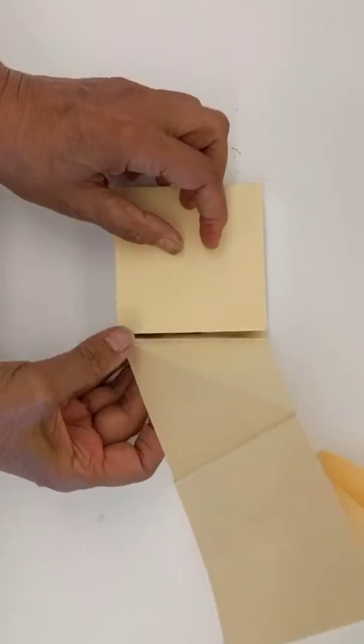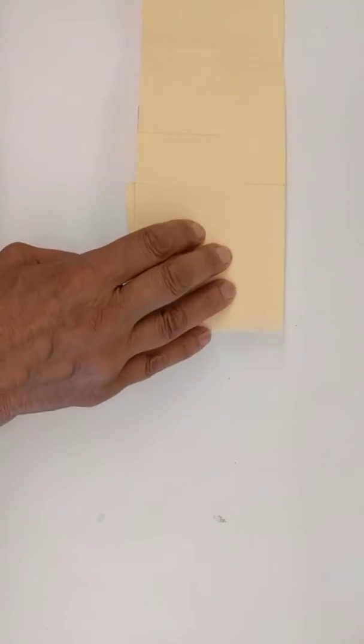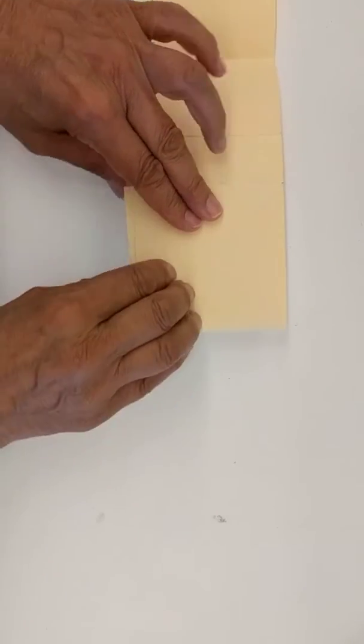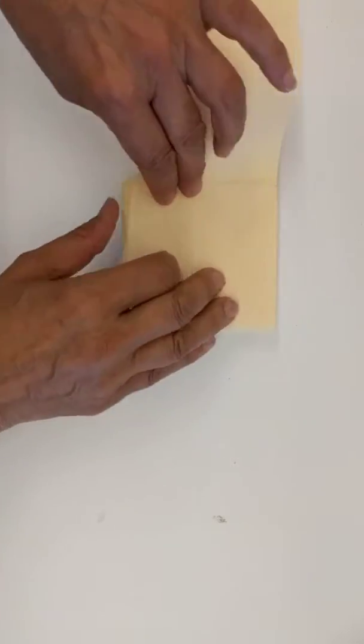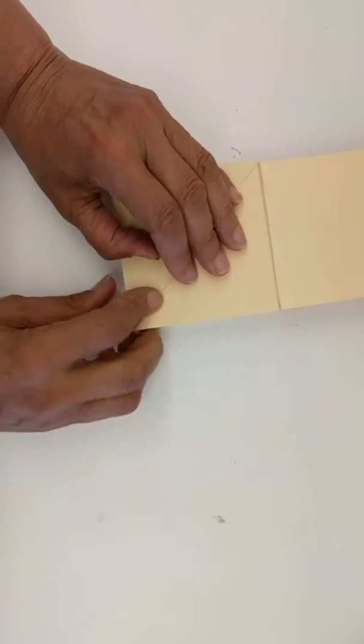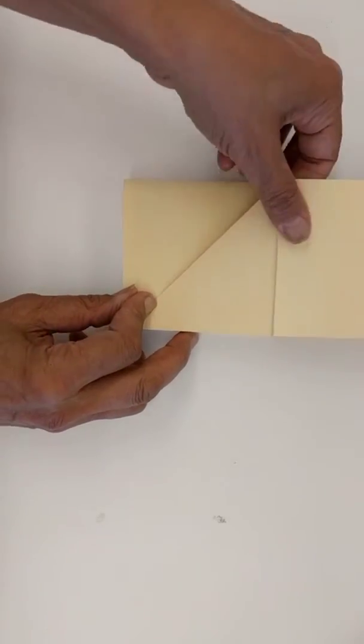I'm going to be changing directions so I will lay this down, make a score from corner to corner of this square and make that fold.